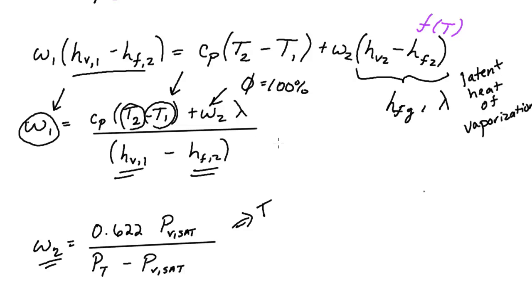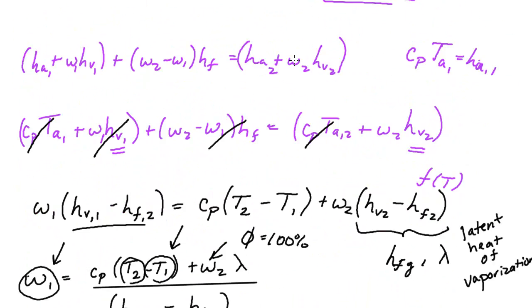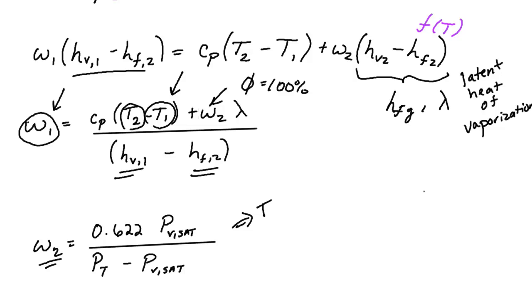I may do an example of determining this in the future, but for this series we're going to move on and compare this concept of the adiabatic saturation temperature to the wet bulb temperature, which is normally going to be measured with something called a sling psychrometer. So I hope you'll join me in those videos. See you soon.